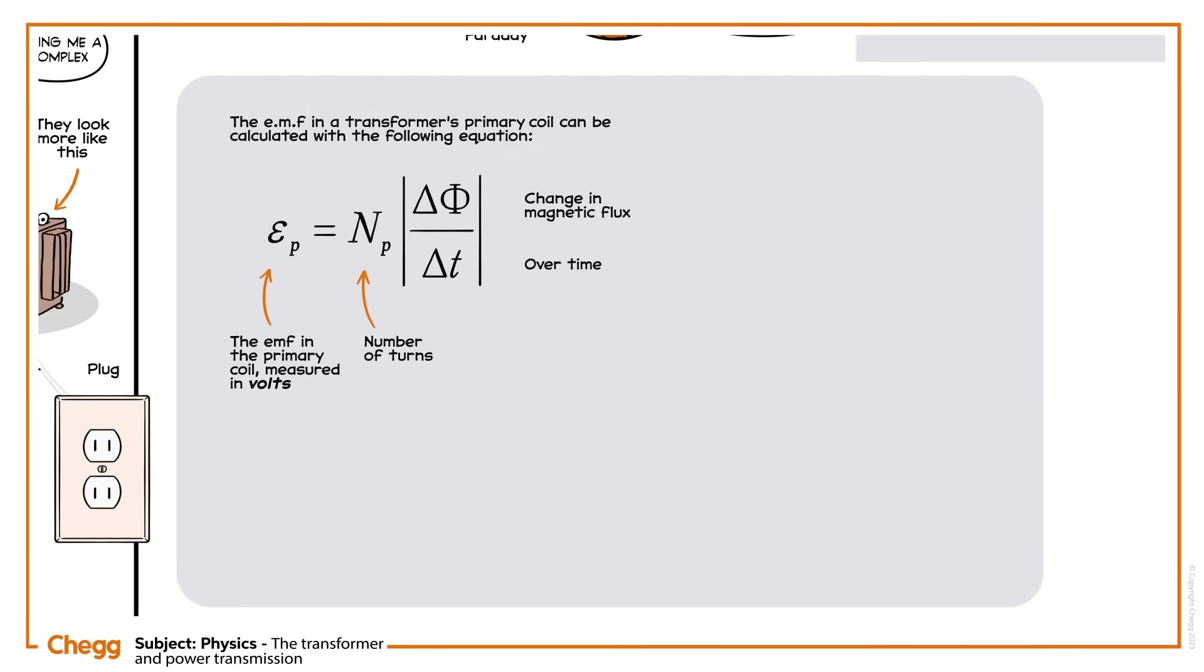The loss in magnetic flux between the two coils is negligible, so we can take the equivalent equation for the secondary coil. All we've done is swap the EMF and number of turns in the primary coil for the EMF and number of turns in the secondary coil.